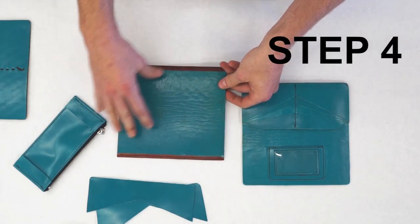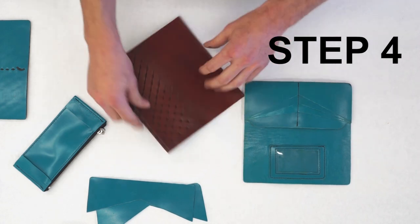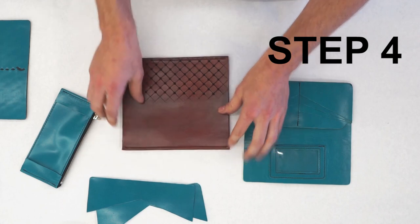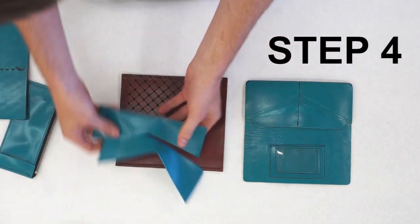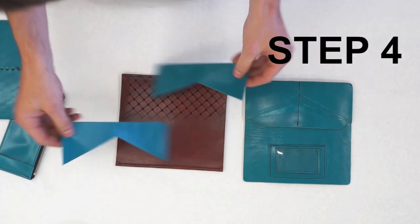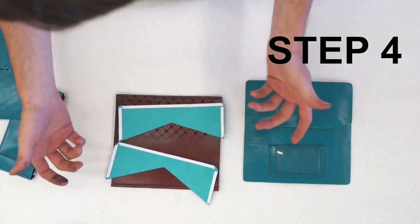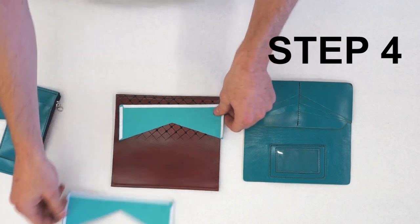On the piece with the rolled edges, this is going to end up being the back pocket. This will end up being your front pockets. So, these being your front pockets, I've already got basting tape or double sided tape on each of them. You can use contact cement if you need to.